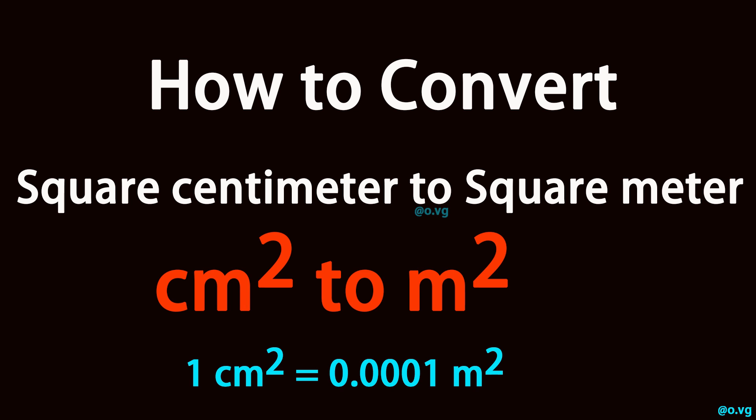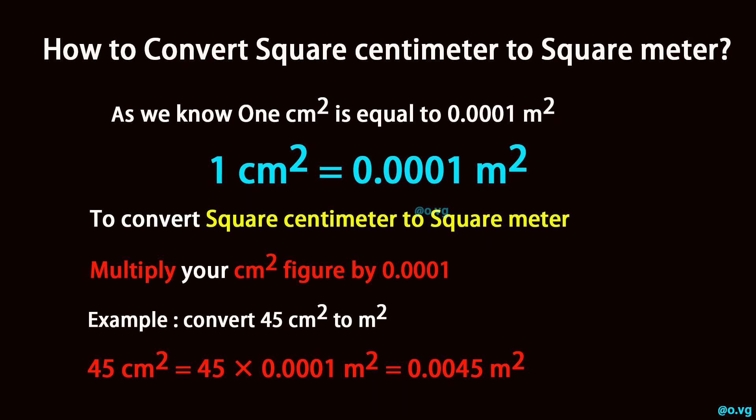How to convert square centimeter to square meter. As we know, one square centimeter is equal to 0.0001 square meter.